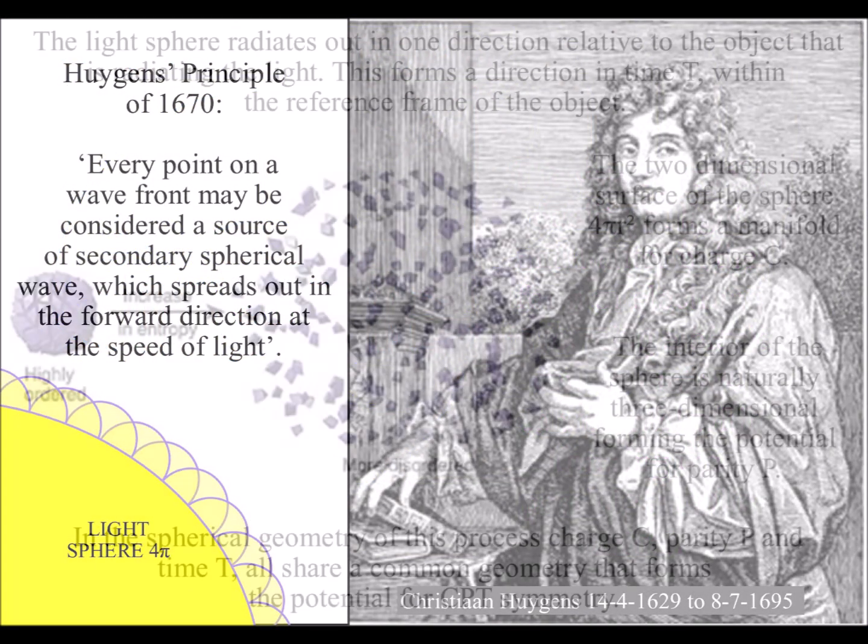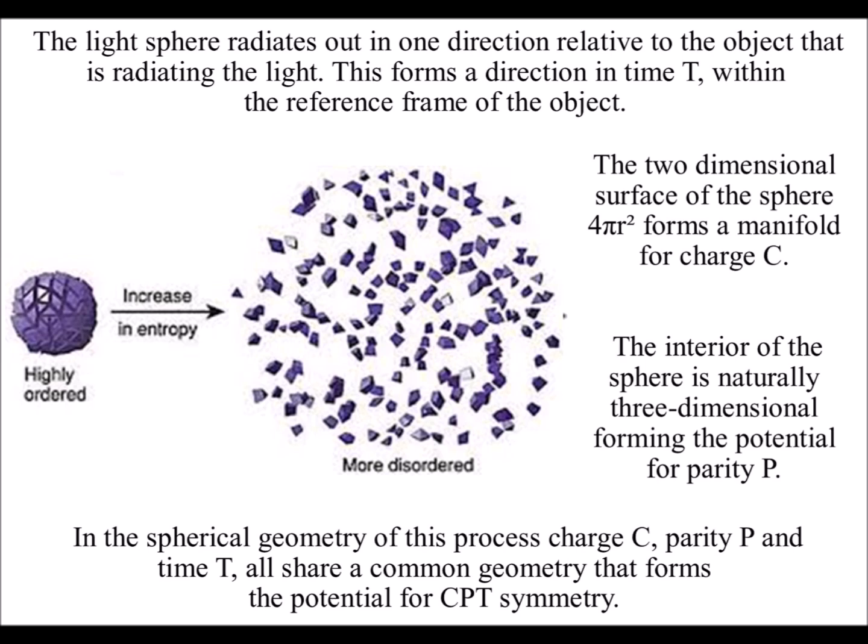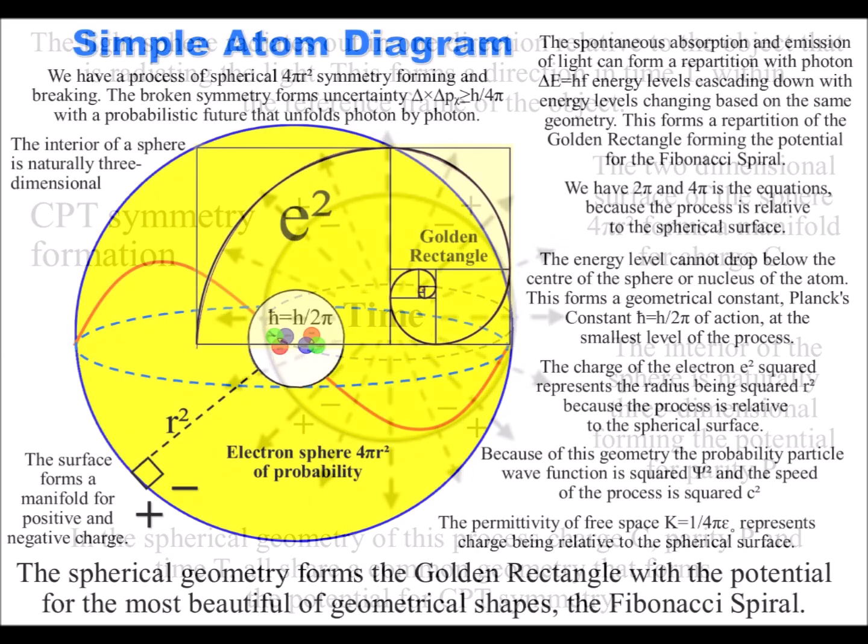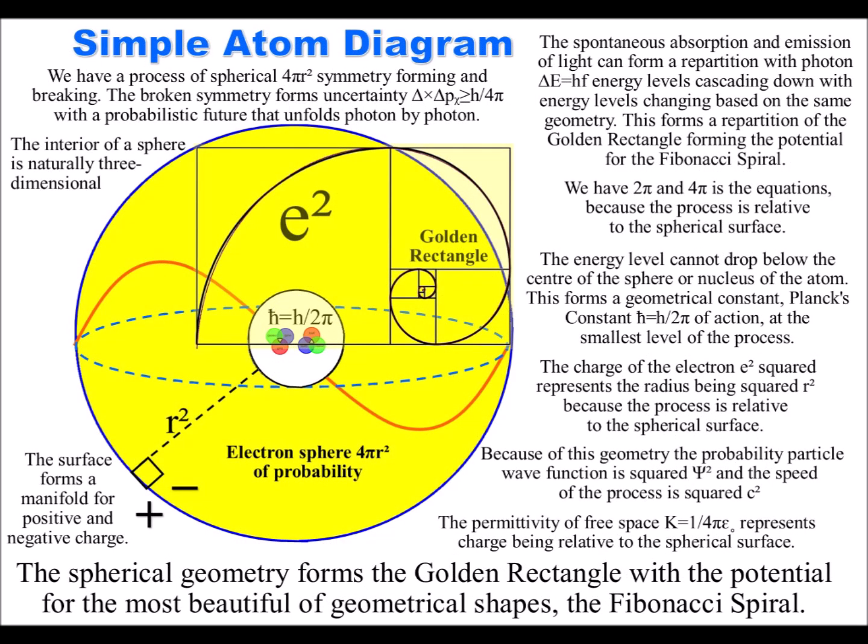This process forms greater degrees of freedom for statistical entropy, but it isn't just random chaos. There is an underlying order governed by three-dimensional spherical geometry that forms the potential for greater complexity to arise.